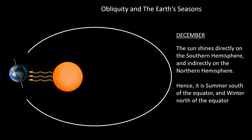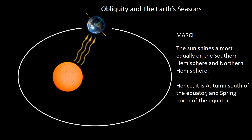In December, the Earth is almost at the perihelion. Due to the actual tilt, the Northern Hemisphere is tilted away from the Sun, and the Southern Hemisphere is tilted towards the Sun. Thus, the Sun shines directly on the Southern Hemisphere but indirectly on the Northern Hemisphere. Hence, in December, it is summer south of the equator and winter north of the equator. Moving to March, the Sun's rays are more evenly distributed, so it is autumn south of the equator and spring north of the equator.